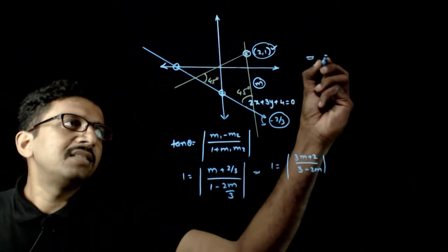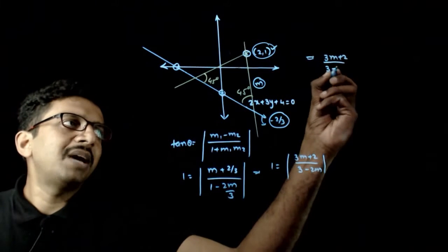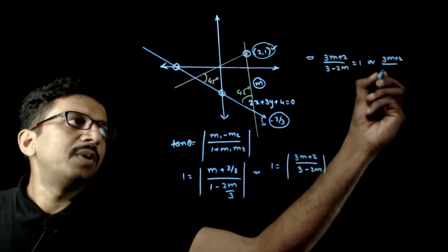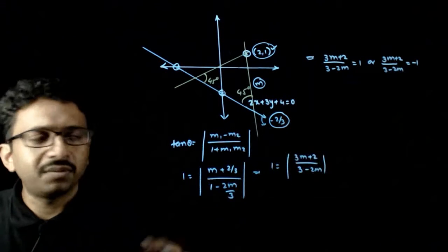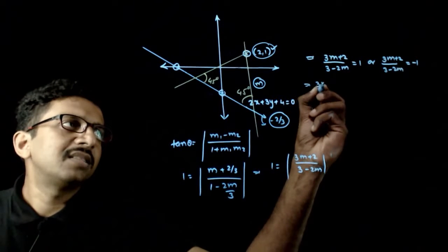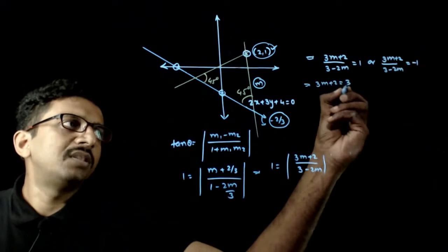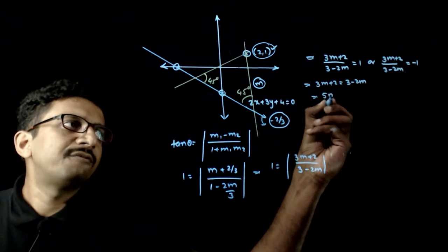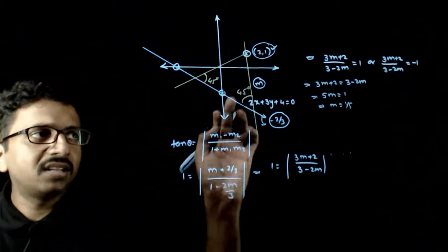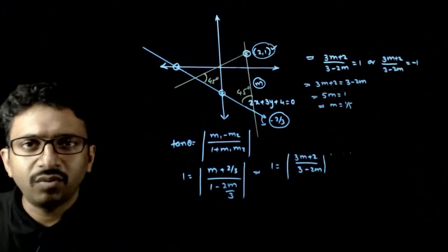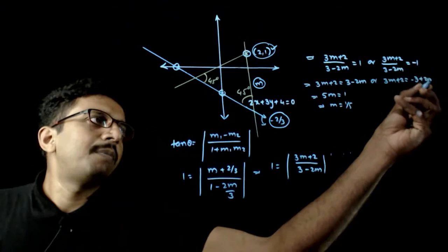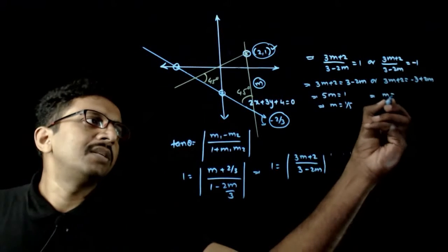This implies 3m plus 2 by 3 minus 2m is equal to 1 or 3m plus 2 by 3 minus 2m is equal to minus 1, because mod of this equals 1 implies the expression can be either plus 1 or minus 1. From the first case: 3m plus 2 equals 3 minus 2m, so 5m equals 1, giving m equals 1 by 5. From the second case: 3m plus 2 equals minus 3 plus 2m, giving m equals minus 5.